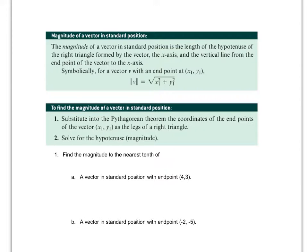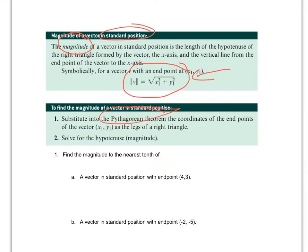If they ask you to calculate the magnitude, you can use the formula where you take the x-coordinate and square it, the y-coordinate and square it, add the two quantities together, and then square root the result. That will give you the magnitude of any vector in standard position. For this course, we're going to stay in standard position. If you find that formula confusing, you can just use the Pythagorean theorem — it does the exact same thing.